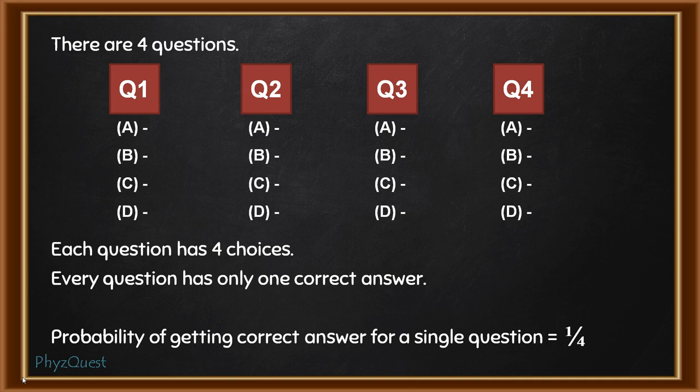Now, there are 4 questions, and for each of them we need to find the correct answer by doing the same random guesses. If we consider this, these are actually 4 events occurring together. The event is finding out the correct answer for a question, and there are 4 questions. We have calculated the probability of a single event, that is 1 by 4. But there are 4 events occurring together. When we calculate the probability involving more than one event occurring together, we usually multiply the probabilities.